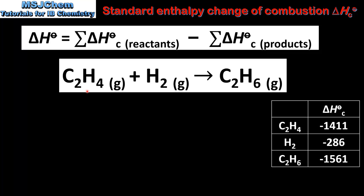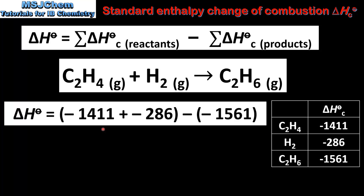Here we have the equation for which we will calculate the enthalpy change. In this reaction C2H4, which is ethene, reacts with hydrogen to form C2H6, which is ethane. In this table we have the standard enthalpy change of combustion values for the reactants and products.